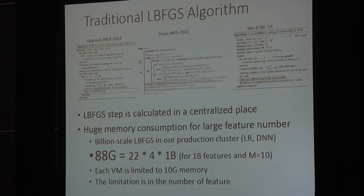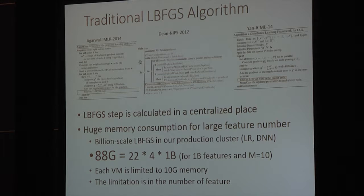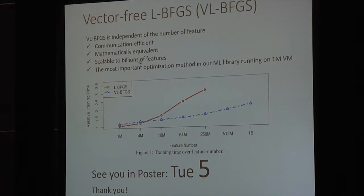This bottleneck depends on the number of features. For large-scale feature spaces, which are very common — for example in logistic regression — if you use one billion features, you need 88 gigabytes of memory to store all the historical information for L-BFGS when calculating the direction. But in our MapReduce environment, you may only have 10 gigabytes of memory. This limitation is the motivation for our work, which we call vector-free L-BFGS.